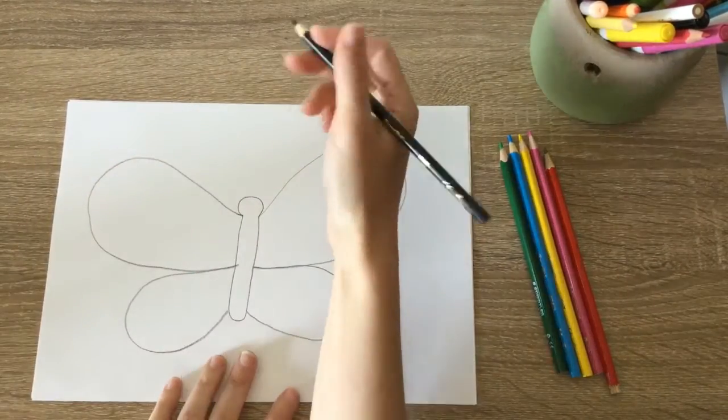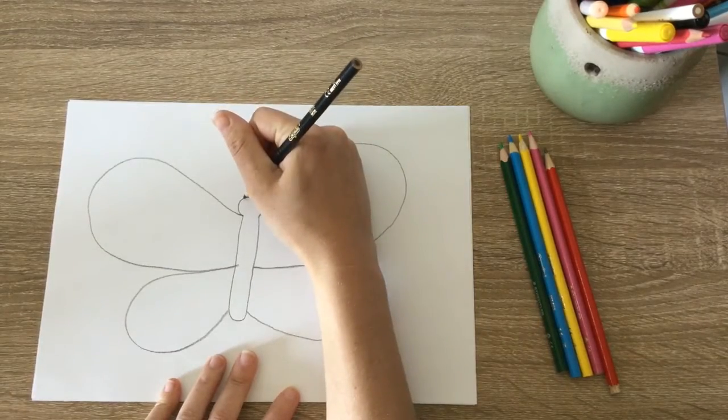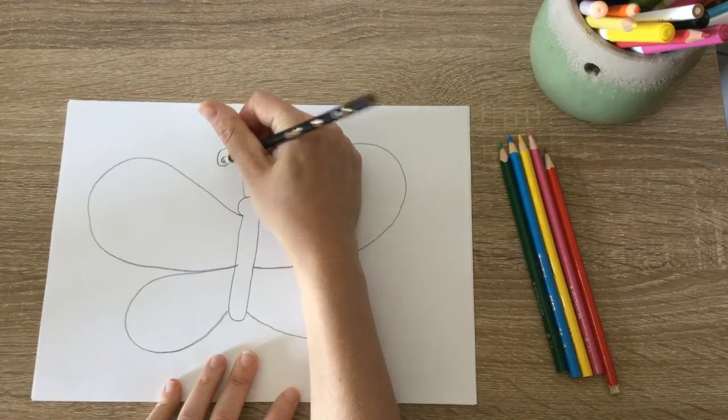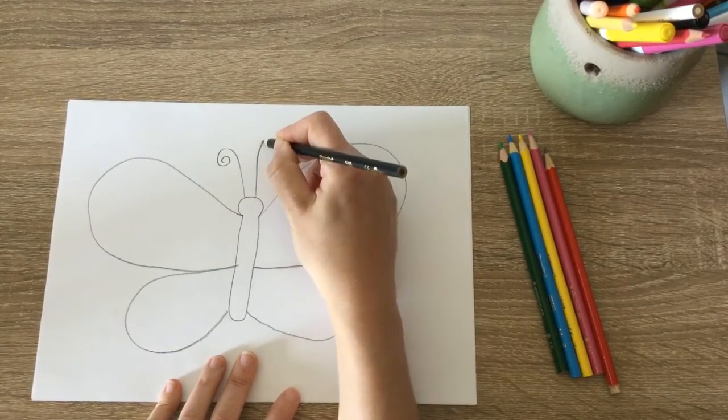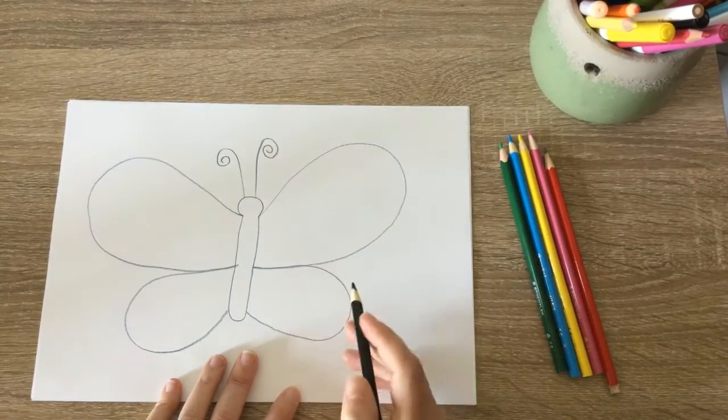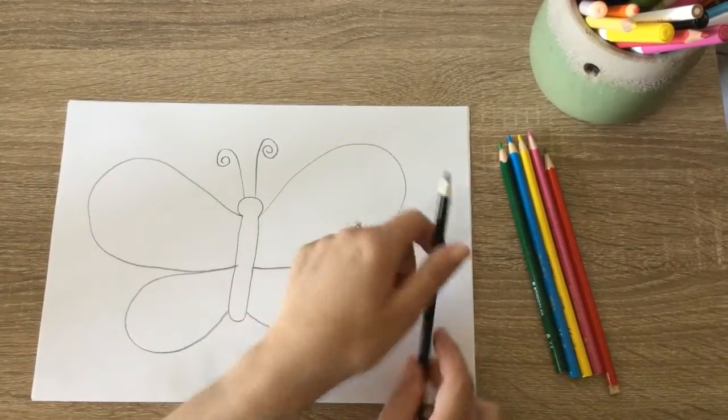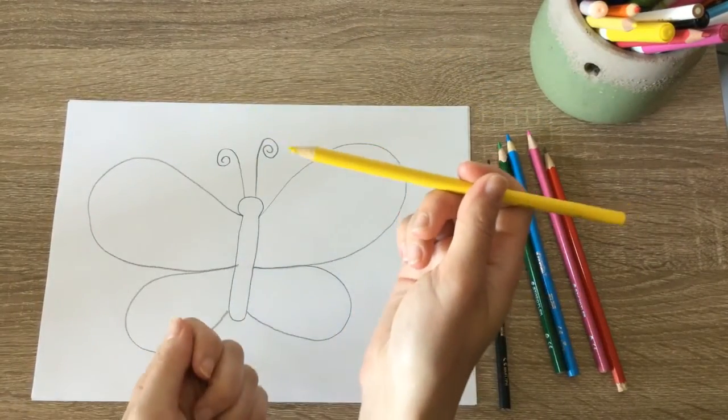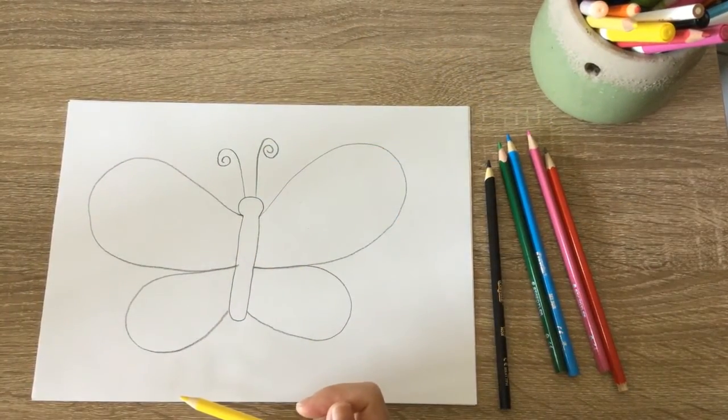Now I'm going to draw his antennae. I always like to do like a little swirl, but you can do yours straight if you want. Like all around and I draw a swirl. So now what I'm going to do is I'm going to color in his body. Now I've decided I want his body to be yellow. You can choose what you want the body to be.